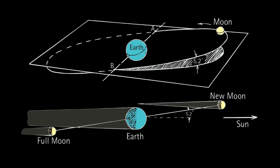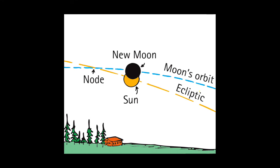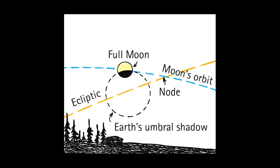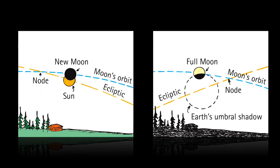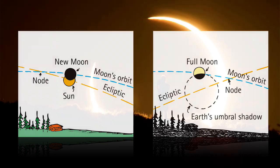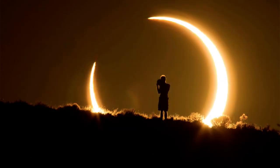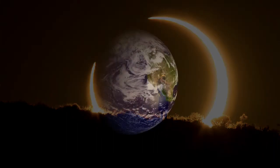Let me leave you with a challenge. The moon is always a new moon during a solar eclipse, and always a full moon during a lunar eclipse. Can you explain why out loud? I bet you can. Try it. And good science to you.